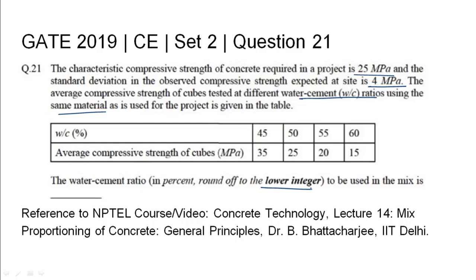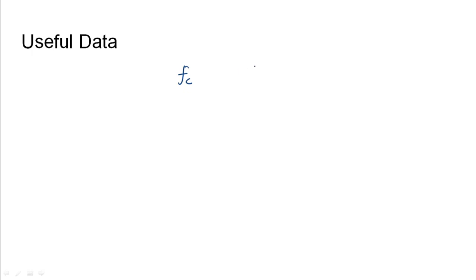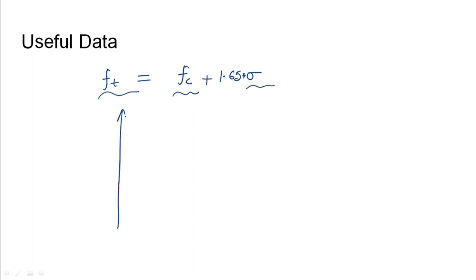When we talk about concrete, we have a certain characteristic strength which varies depending upon a standard deviation sigma. Using these two, the target strength of the concrete to be used at site is found, which is equal to the characteristic strength plus 1.65 times the standard deviation sigma. Once we know this target strength FT, we can obtain the water-cement ratio corresponding to it using the compressive strength versus water-cement ratio graph.